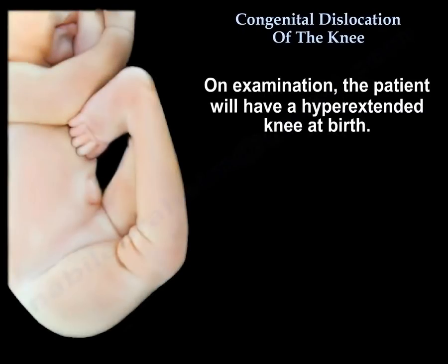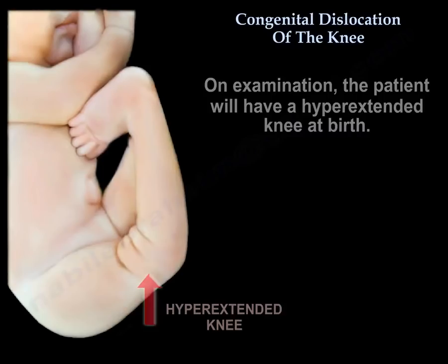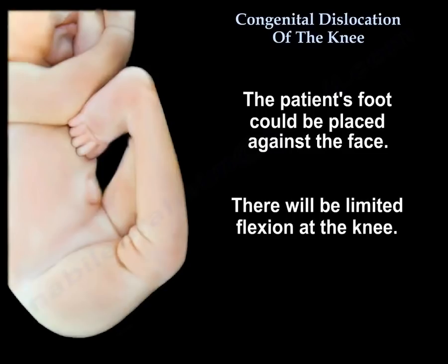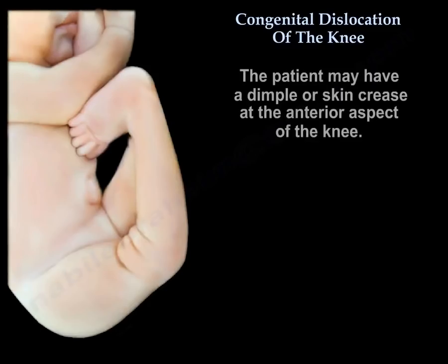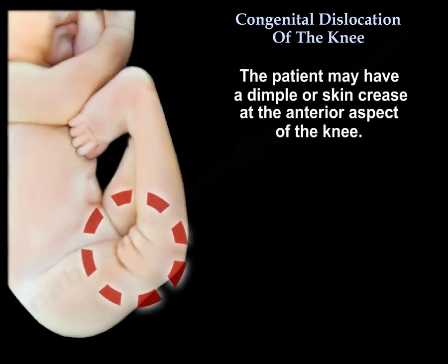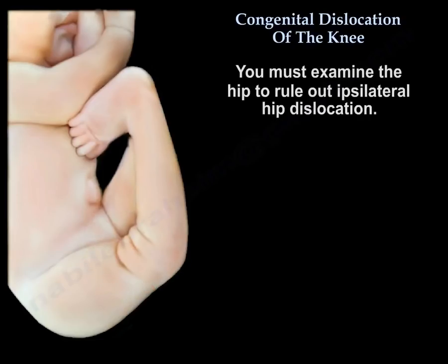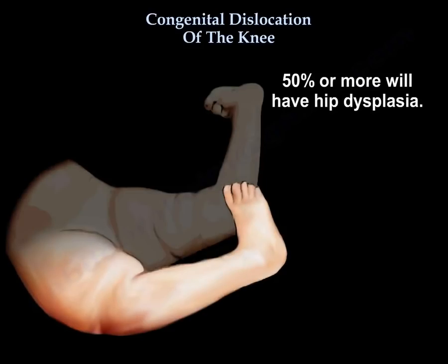On examination, the patient will have a hyper-extended knee at birth. The patient's foot can be placed against the face, and there will be limited flexion at the knee. The patient may have a dimple or a skin crease at the anterior aspect of the knee. You must examine the hip to rule out ipsilateral hip dislocation, as 50% or more will have hip dysplasia.